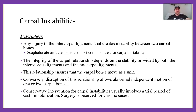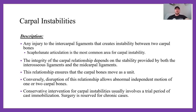Let's talk about carpal instabilities. Any injury to the intercarpal ligaments that creates instability between two or more carpal bones is known as carpal instability. The scapholunate articulation and the scapholunate ligament is the most common area for this pathology. The integrity of the carpal relationship depends on stability provided by both the interosseous ligaments and the midcarpal ligaments, ensuring carpal bones move as a unit. Disruption allows abnormal independent motion of one or two carpal bones. Conservative intervention usually involves a trial period of cast immobilization; surgery is reserved for chronic cases.